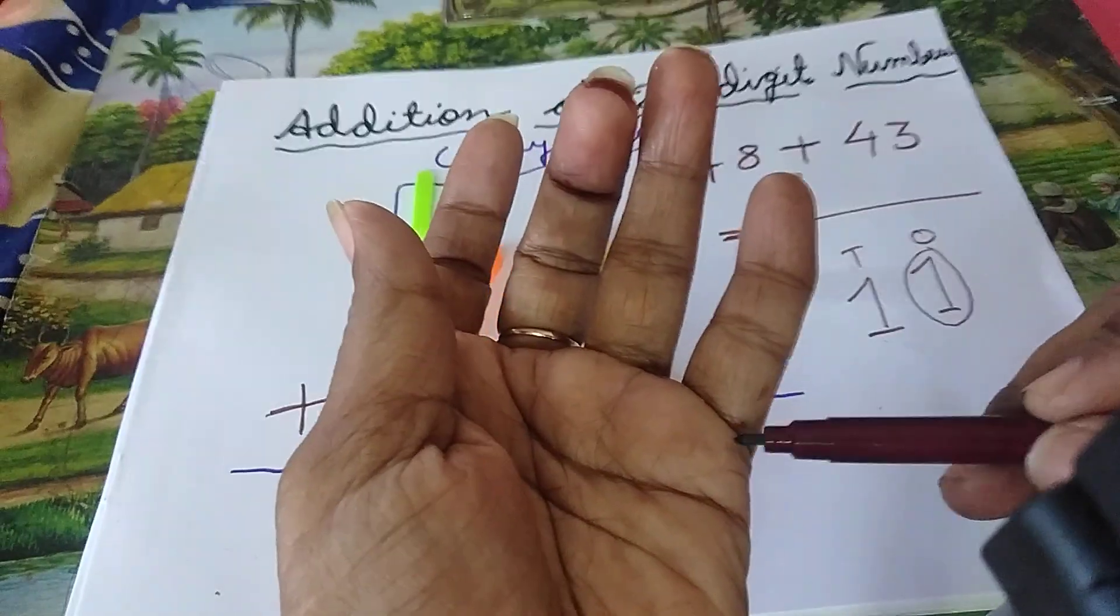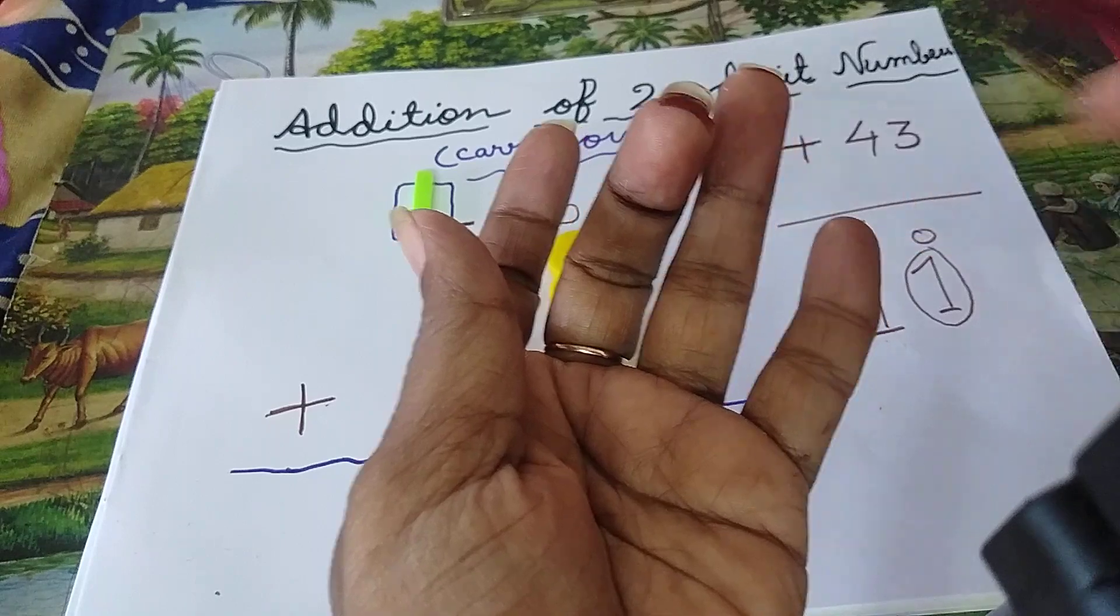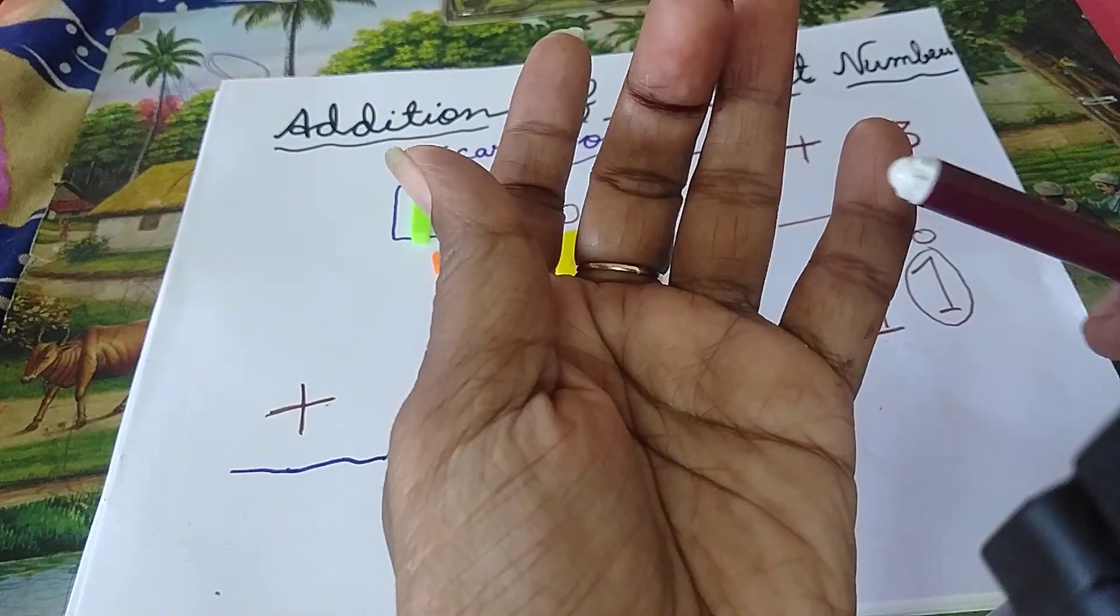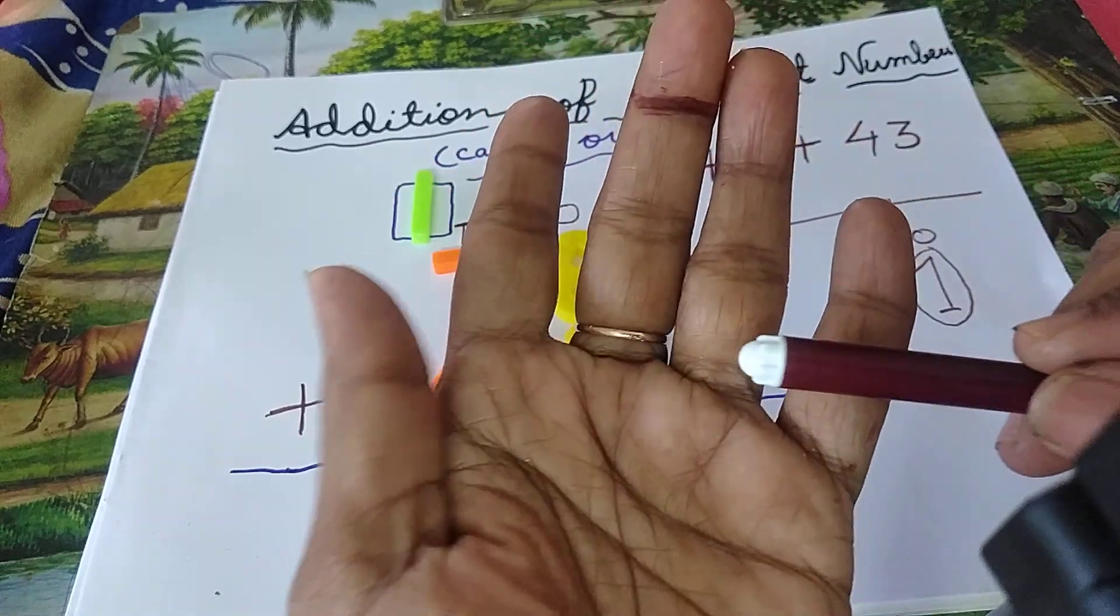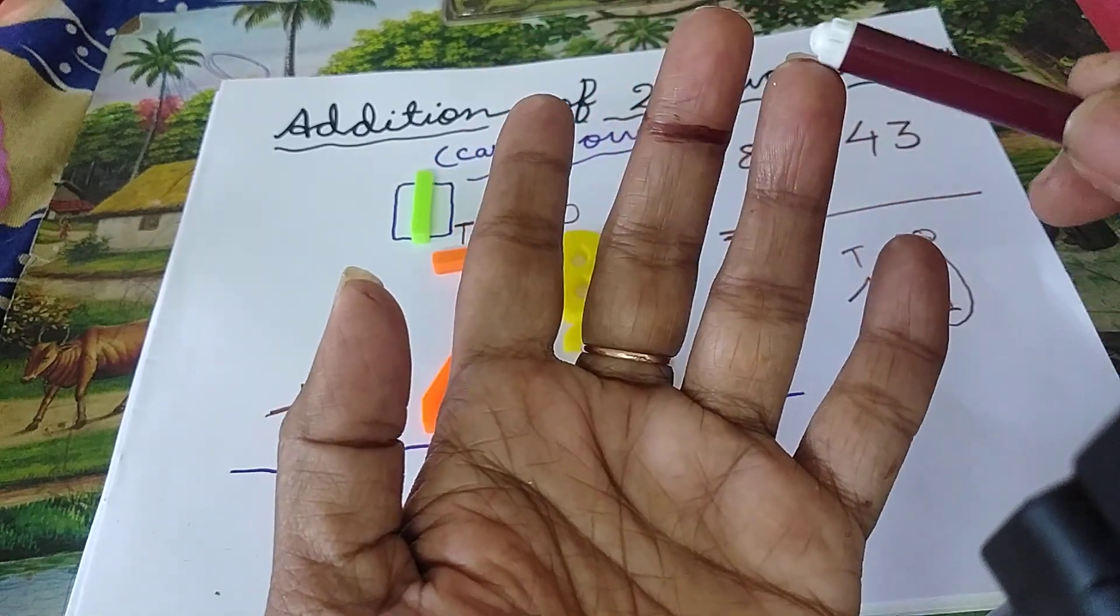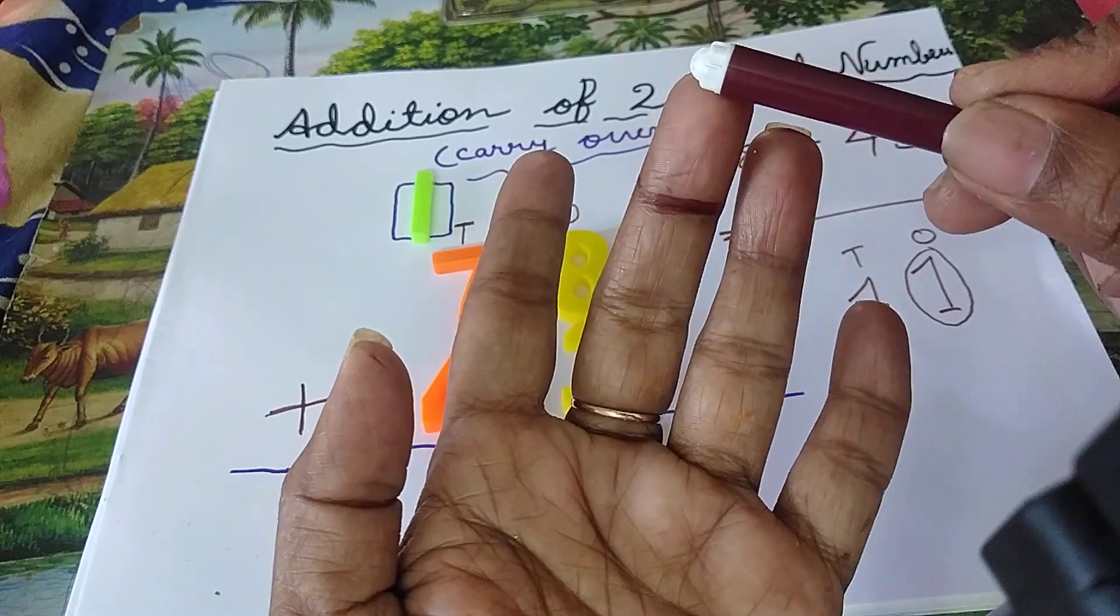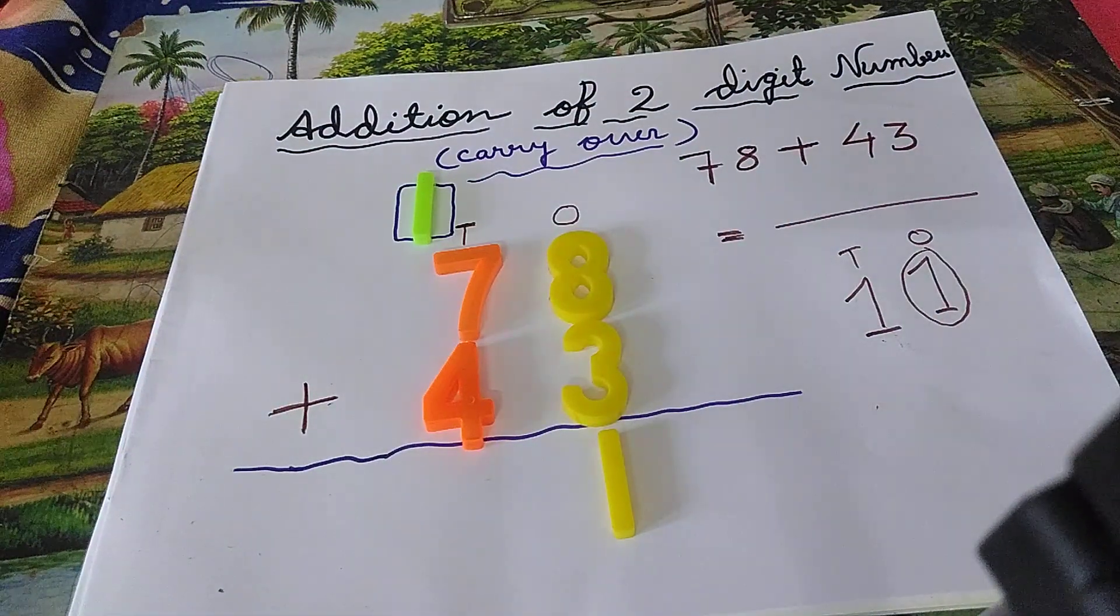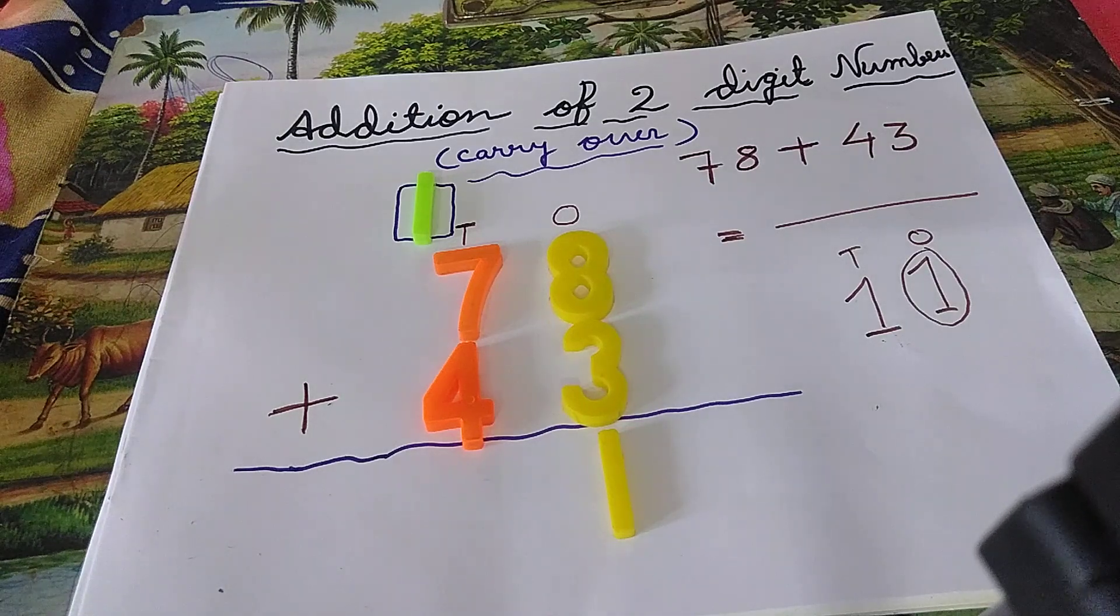Then children, from here to here, how many lines are there? One, two, three, four, five, six, seven, eight, nine, ten, eleven, twelve. Okay, so right here, twelve.